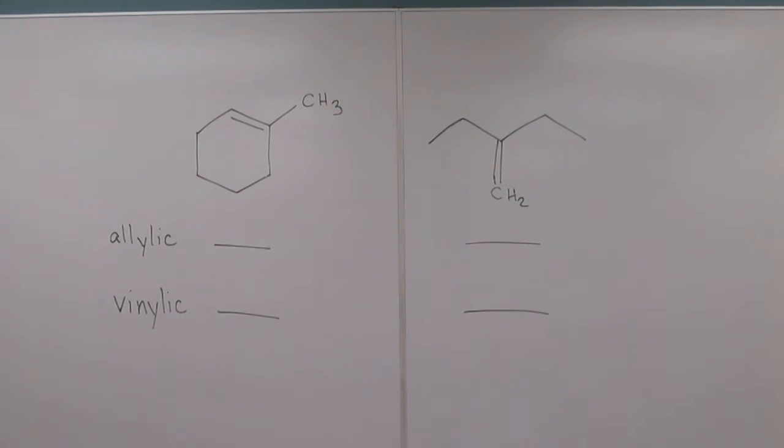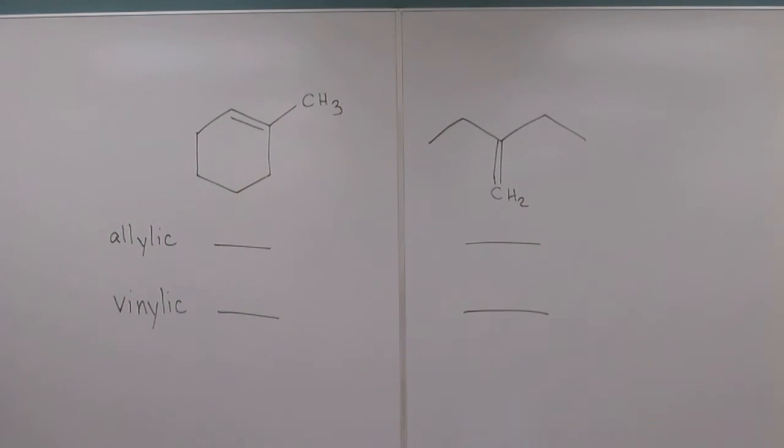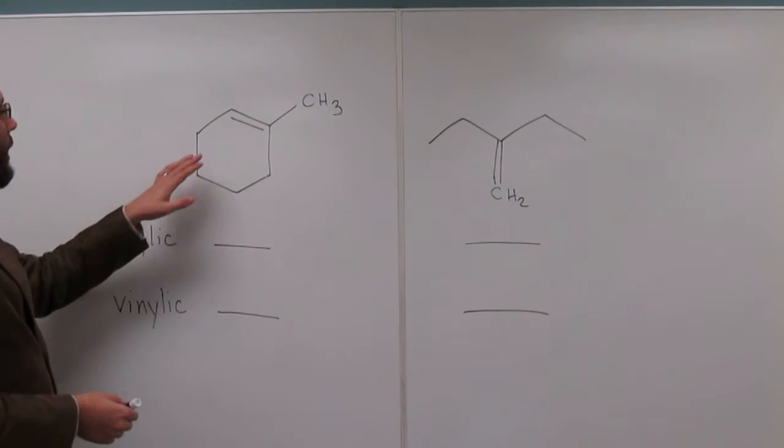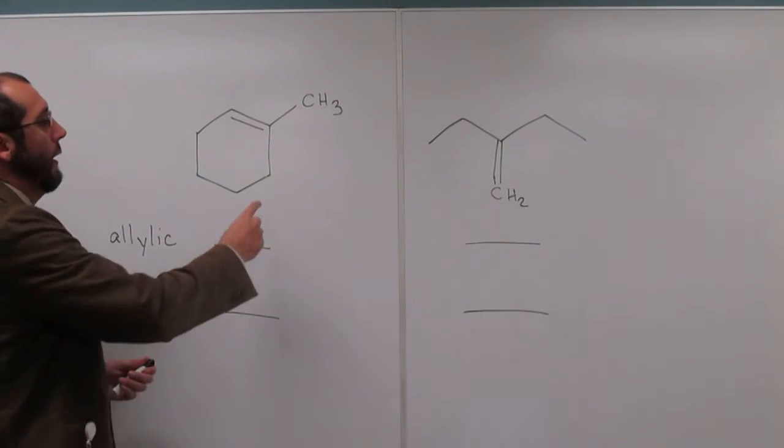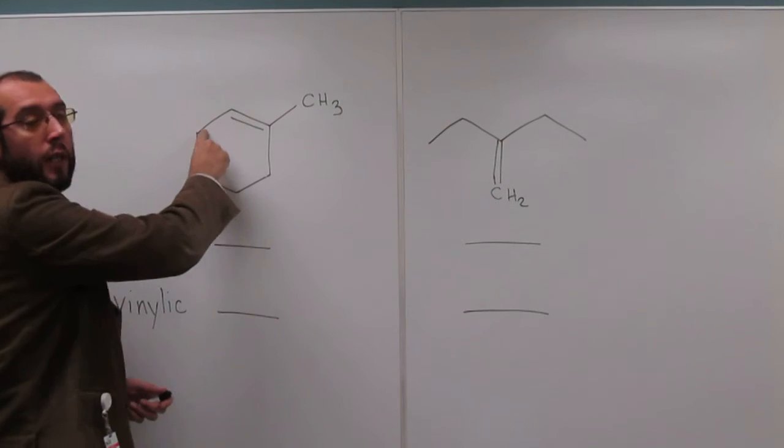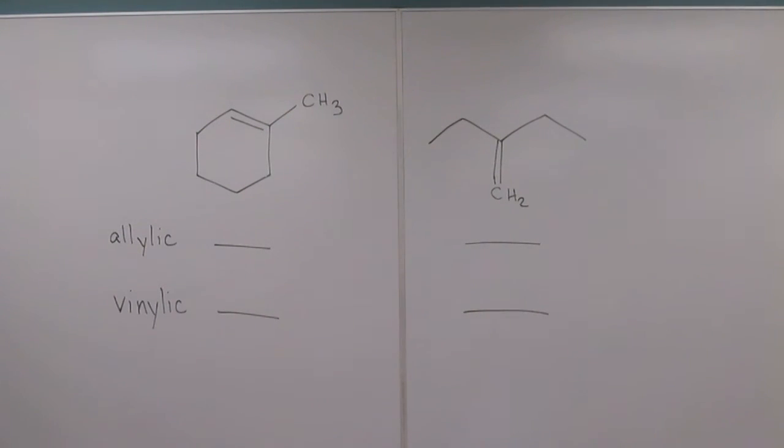So the hydrogens that are directly connected onto the alkene, those we call vinylic hydrogens. If we look at this double bond here, we can see it's got one, two, three substituents on it already. Three substituents - it's got the three carbon atoms.